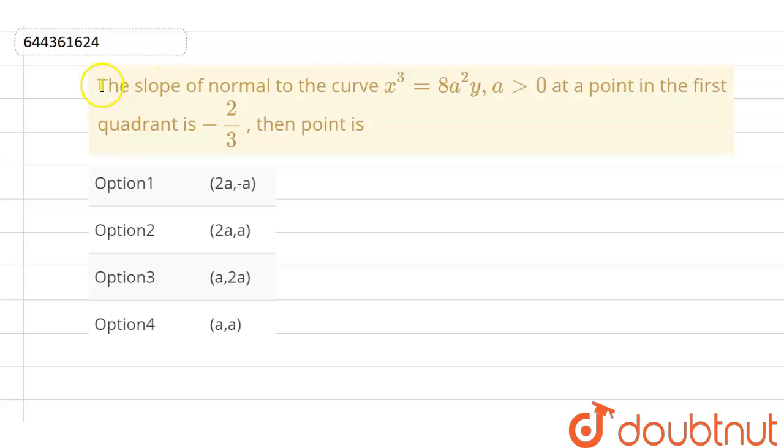In this question, it is said that the slope of normal to the curve x³ = 8a²y, where a > 0, at a point in the first quadrant is -2/3. And we have to find the point.